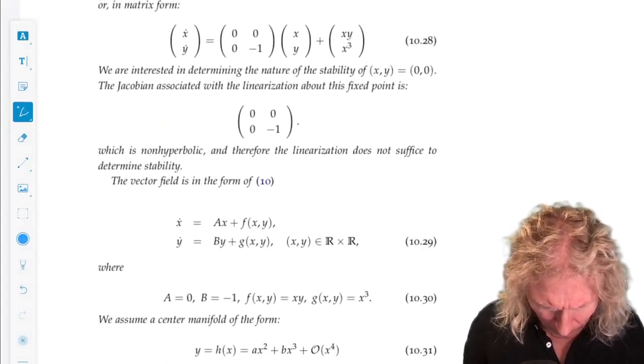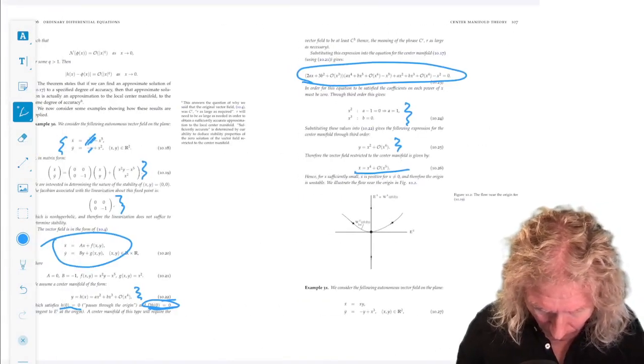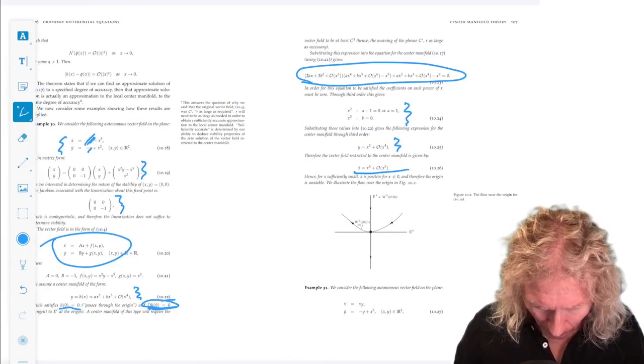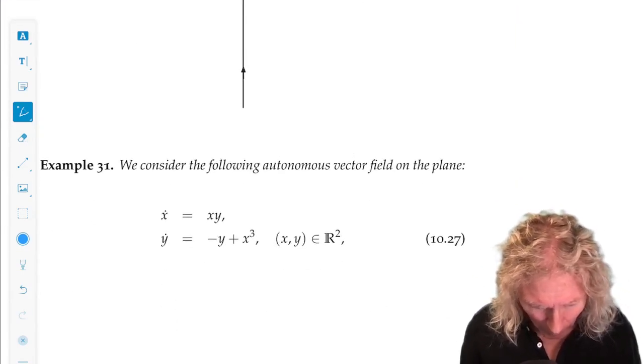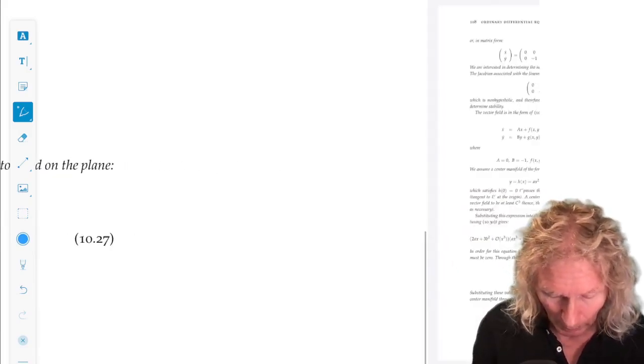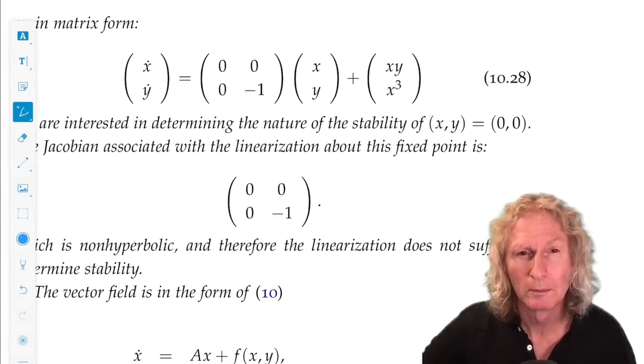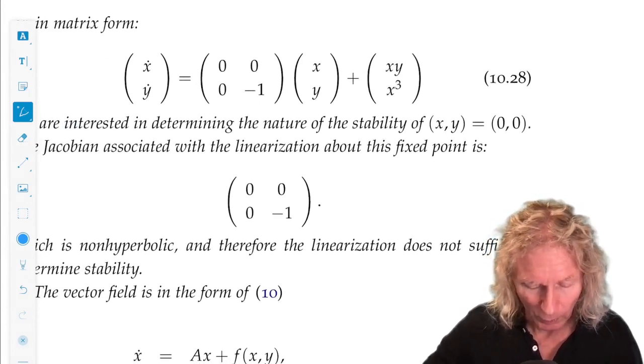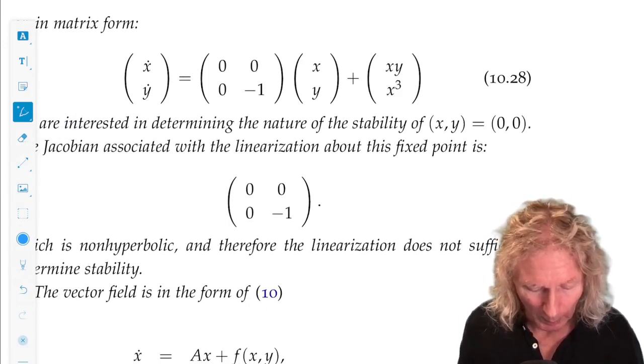The example: x dot equals xy, y dot equals minus y plus x cubed. Okay, equation in the right form. We see the origin is a fixed point, and it's non-hyperbolic.